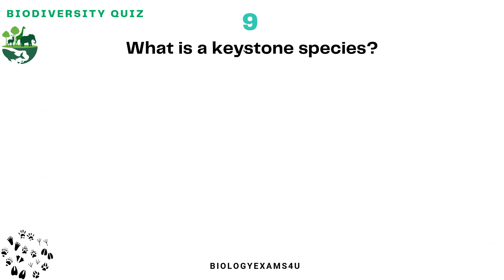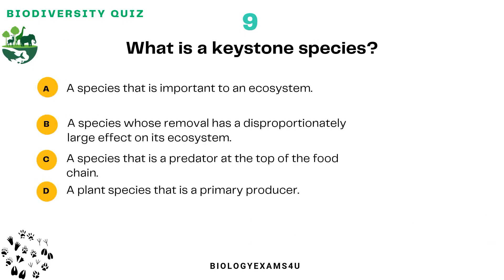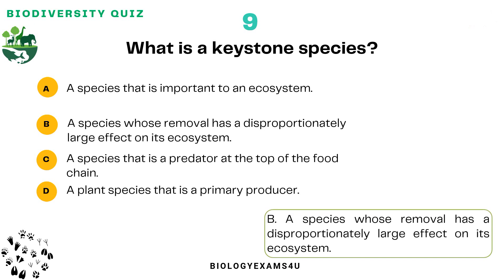Question number nine: What is a keystone species? Option A: A species that is important to an ecosystem. Option B: A species whose removal has a disproportionately large effect on its ecosystem. Option C: A species that is a predator at the top of the food chain. Option D: A plant species that is a primary producer. The answer is: a species whose removal has a disproportionately large effect on its ecosystem. Keystone species include the tiger, elephant in grasslands, etc.